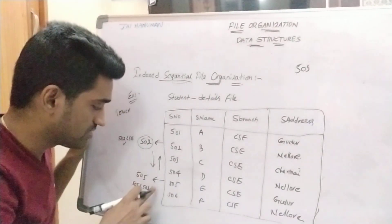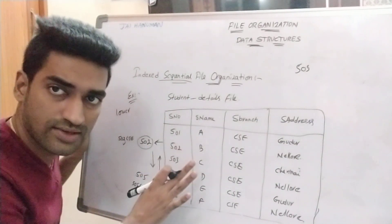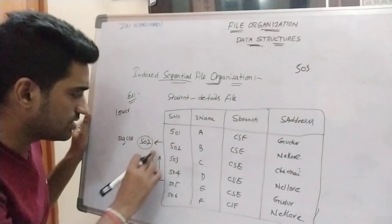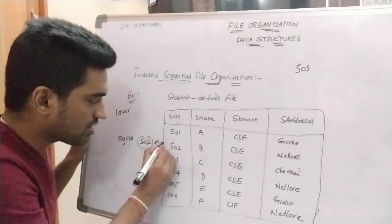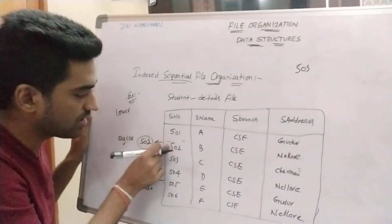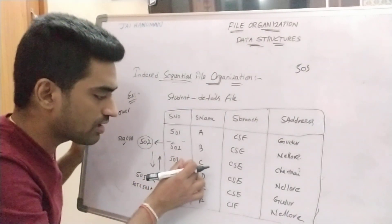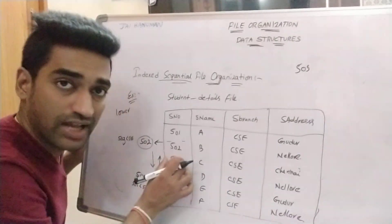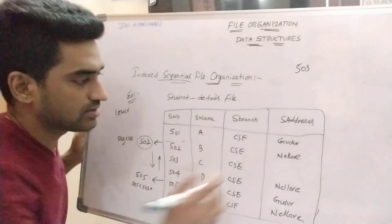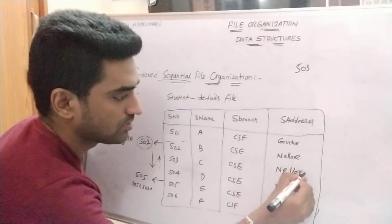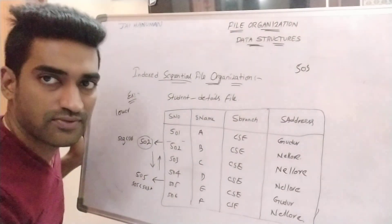So those are the key observations in indexed sequential file organization. The desired record is present in this group only. So here I am considering this group and applying sequential search: 502 is compared to 503 — record is not found. 503 is compared to 503 — record is found. Then I want to update some attribute values for 503; for suppose I want to change the address of 503. This is the best example for indexed sequential file organization.